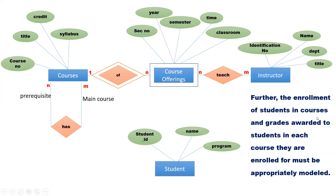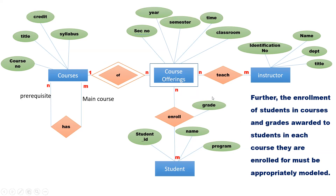Further, the enrollment of students in courses and grades awarded to students in each course they are enrolled for must be appropriately modeled. So we can have a relationship between student and course offering. The student enrolled for a particular course offering, and we should model the grade also. The grade is not an attribute of the student nor an attribute of the course offering — it is an attribute when the student enrolled for a particular course offering. That means grade is an attribute for the relationship enrolled.